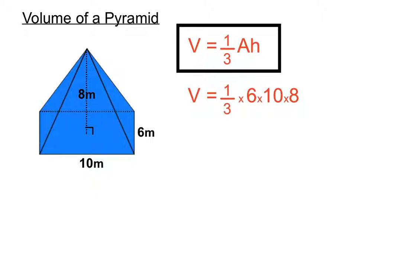Not a lot of ways to go wrong there. We're just substituting all those numbers into the formula, letting our calculator do the work, and we get 160. Our units are going to be meters cubed, cubic meters for volume. Got a little 3 up the top every time.